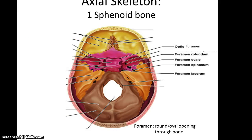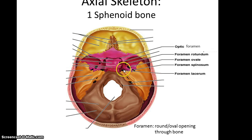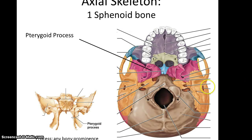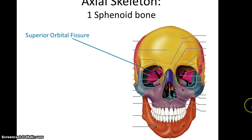Other foramen found in the sphenoid bone include the foramen rotundum, the foramen ovale, the foramen spinosum, and the foramen lacerum. They form sort of a triangular shape if you connected all the dots. If you look at the bottom of the skull, you see hanging down from it is the pterygoid process — there are two of these for the sphenoid bone. And if you look at the front of the skull, you can see the sphenoid bone is in the back of the cavity of the orbits, and there is a fissure called the superior orbital fissure.